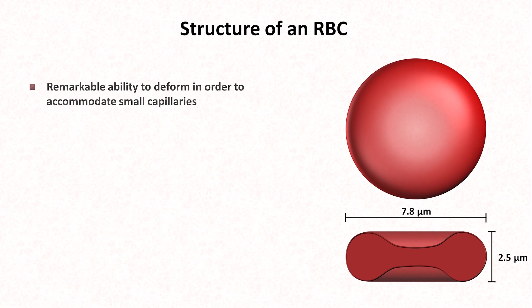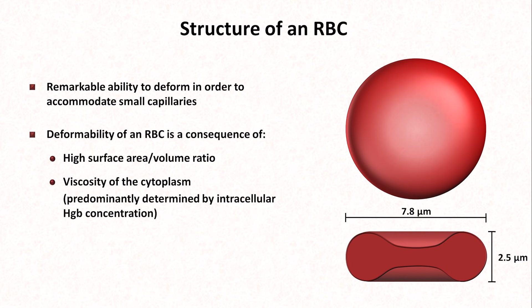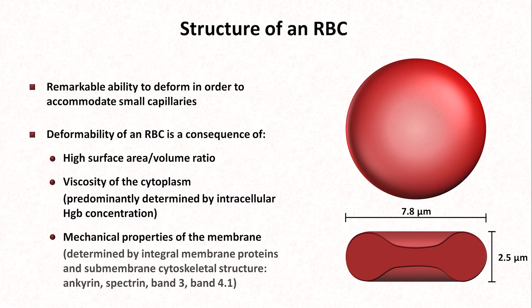RBCs have a remarkable ability to deform in order to accommodate small capillaries. This deformability is a consequence of the high surface area to volume ratio, meaning there is plenty of redundant cell membrane; the viscosity of the cytoplasm, which itself is predominantly determined by the intracellular concentration of hemoglobin; and the mechanical properties of the membrane, which are determined by integral membrane and submembrane cytoskeletal proteins that have great names such as ankyrin, spectrin, band 3, and band 4.1.